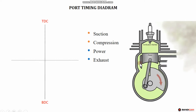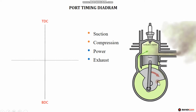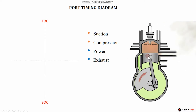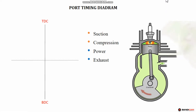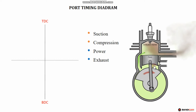The next key is the movement from BDC to TDC. From BDC to TDC, this is the compression stroke — this is the compression.